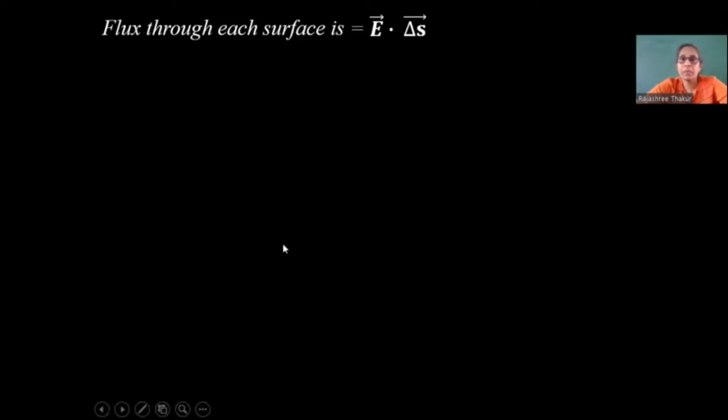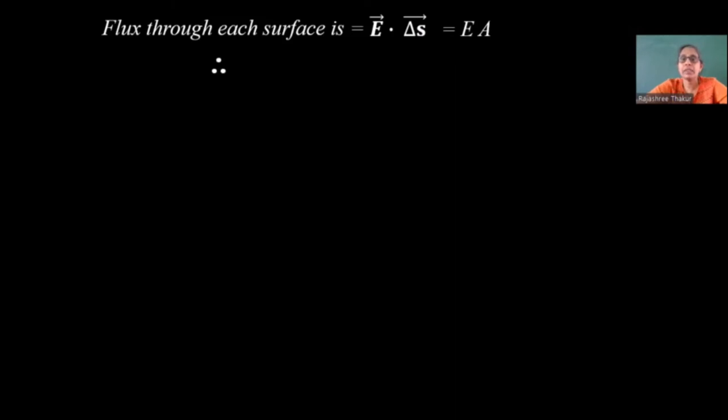Flux through each surface is given by E dot delta S. Since E and delta S are parallel, the angle between them is 0, and cos 0 is 1. So E dot delta S equals EA. The flux through each surface is EA, and both surfaces add up, giving a total flux through the Gaussian surface of 2EA.